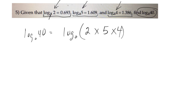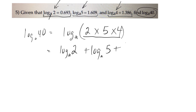So I'm taking the log of a product, and I can change that using the product rule to take the log of the first one plus the log of the second one plus the log of the third one. That's the product rule.